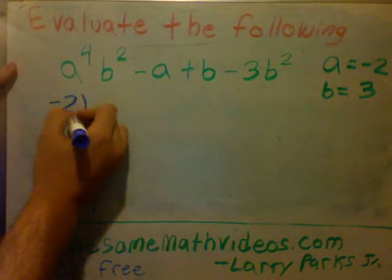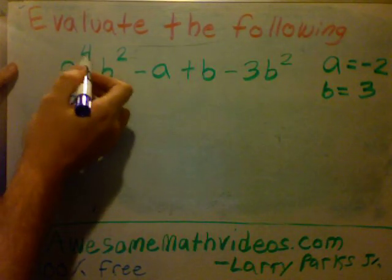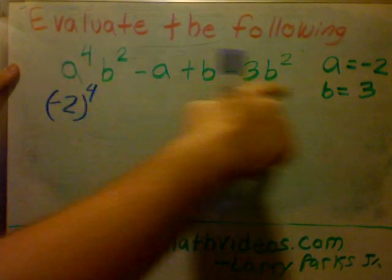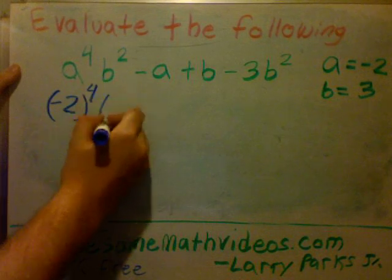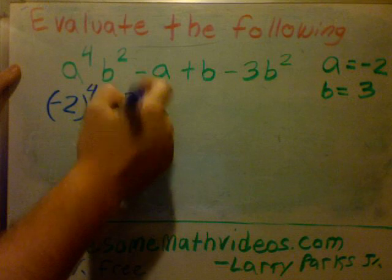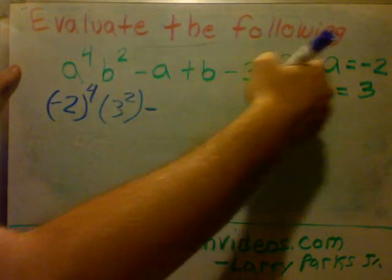And what are we doing to a? Well, we're going to raise a to the fourth power, so I'm going to put a 4 there. Now b, what is b? B is 3, so put 3 there. I like to put everything in parentheses. I'm going to square that.